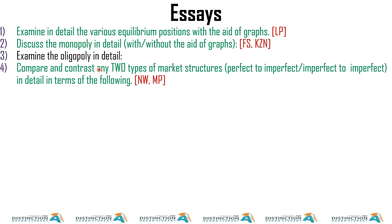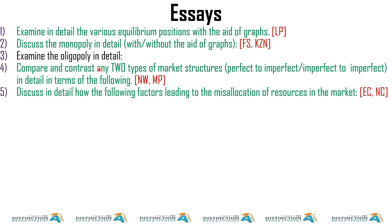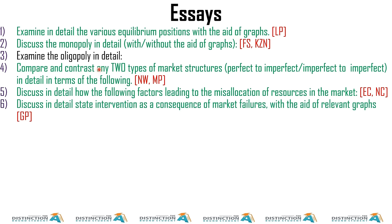Essay 5 — discuss how the following factors lead to misallocation of resources (market failure). That's causes of market failure. Two provinces — Eastern Cape and Northern Cape — and the mnemonic is MEALY: missing markets, imperfect markets, externalities, lack of information, immobility, imperfect distribution. Essay 6 (last for Question 5) — discuss state intervention as a consequence of market failure with relevant graphs: positive externality, negative externality, minimum wage, minimum prices, maximum prices.